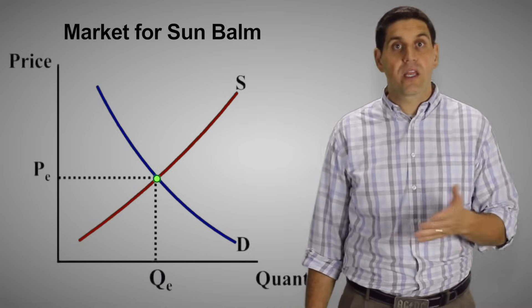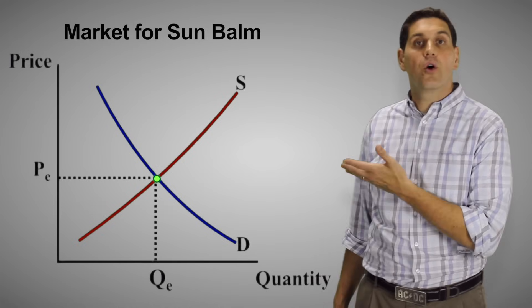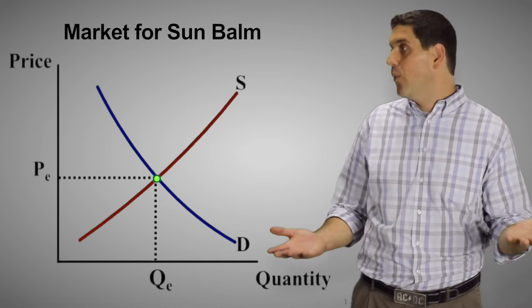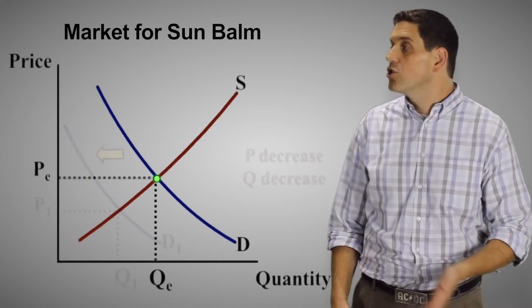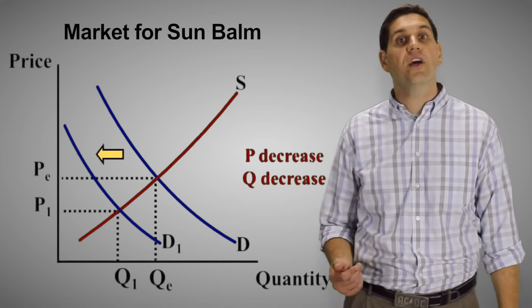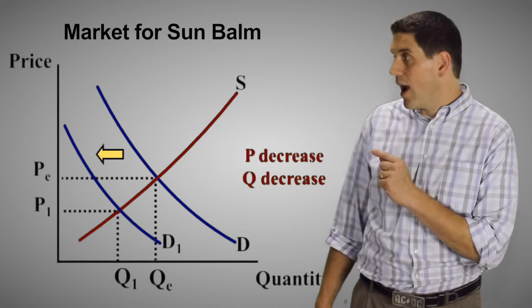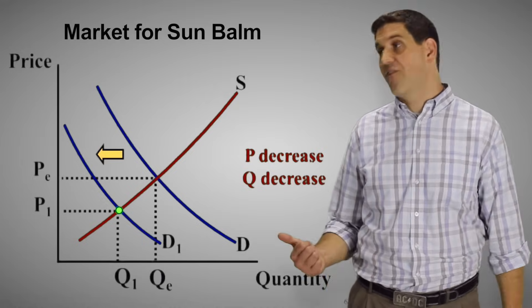Now is the demand going to go up or is it going to go down? Well of course the demand is going to go down because people don't want to wear sun balm during the winter time. They want to wear it during the summer time. So the demand is going to decrease or shift to the left. The new equilibrium is right here and so the price and the quantity is going to fall.